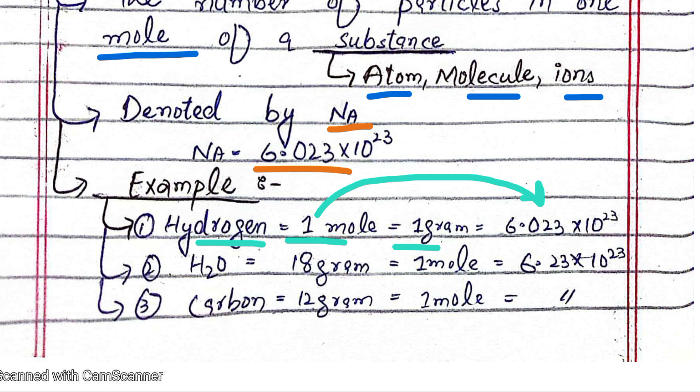Water H2O: 18 grams equals 1 mole of water. One mole of water contains 6.023 × 10^23 particles.